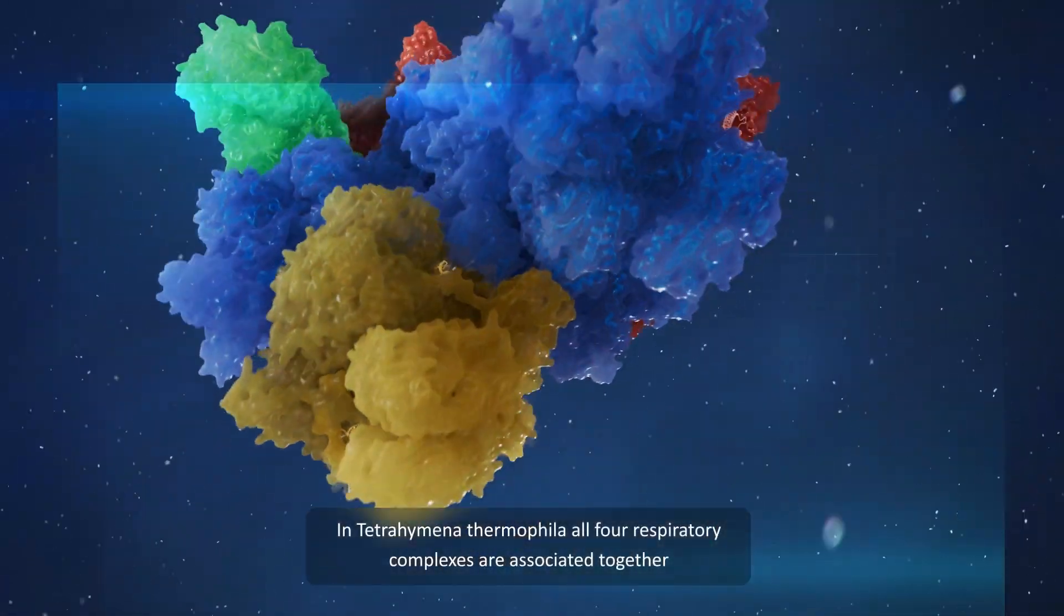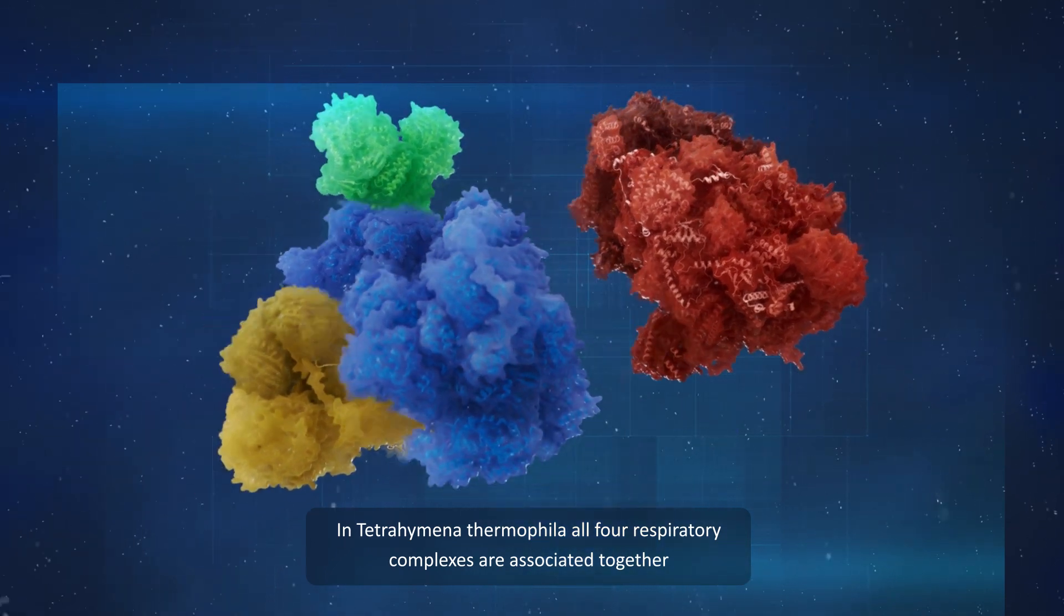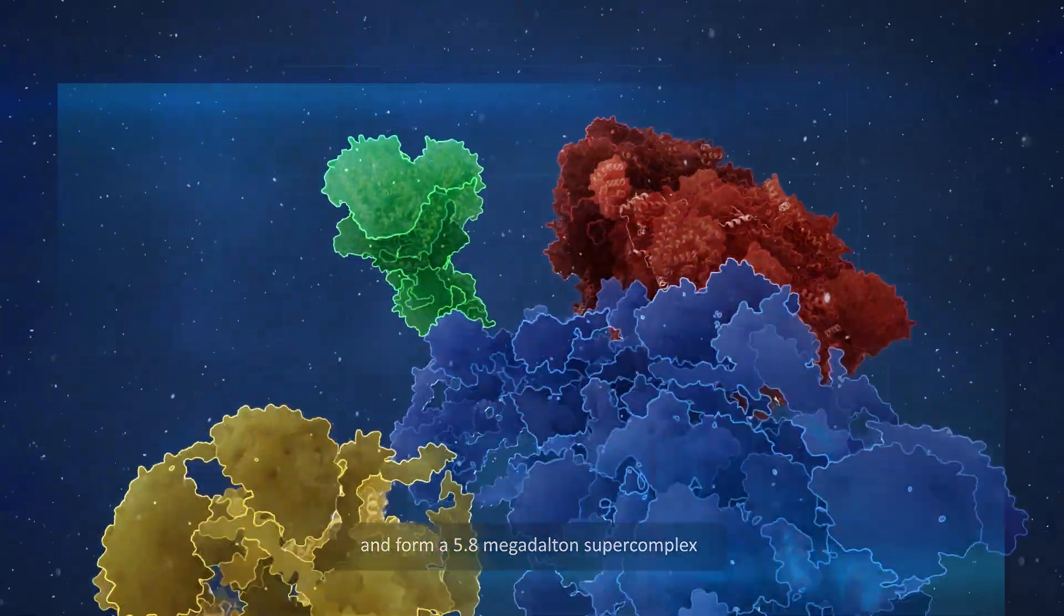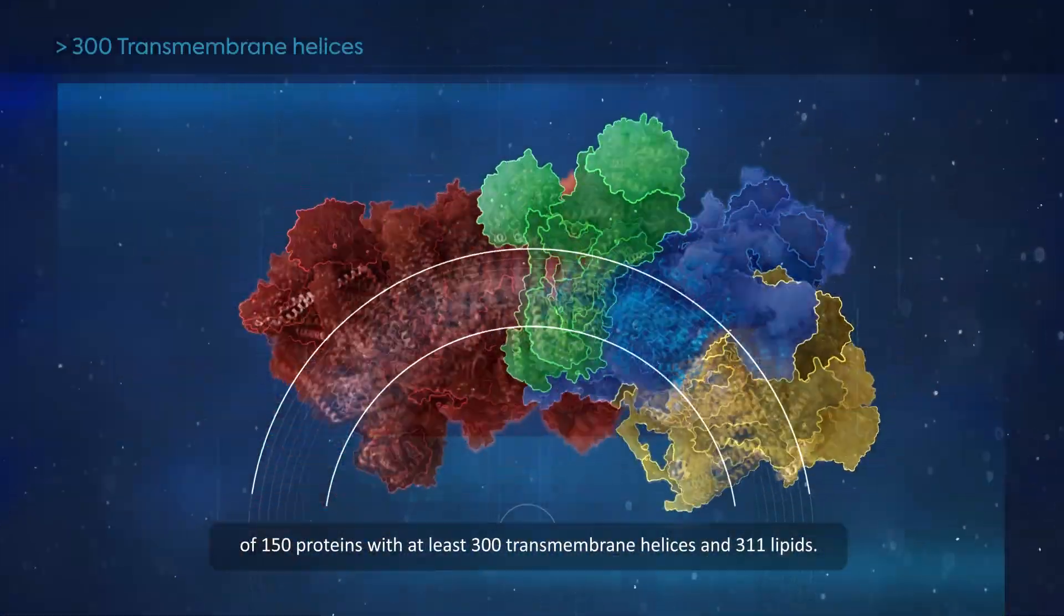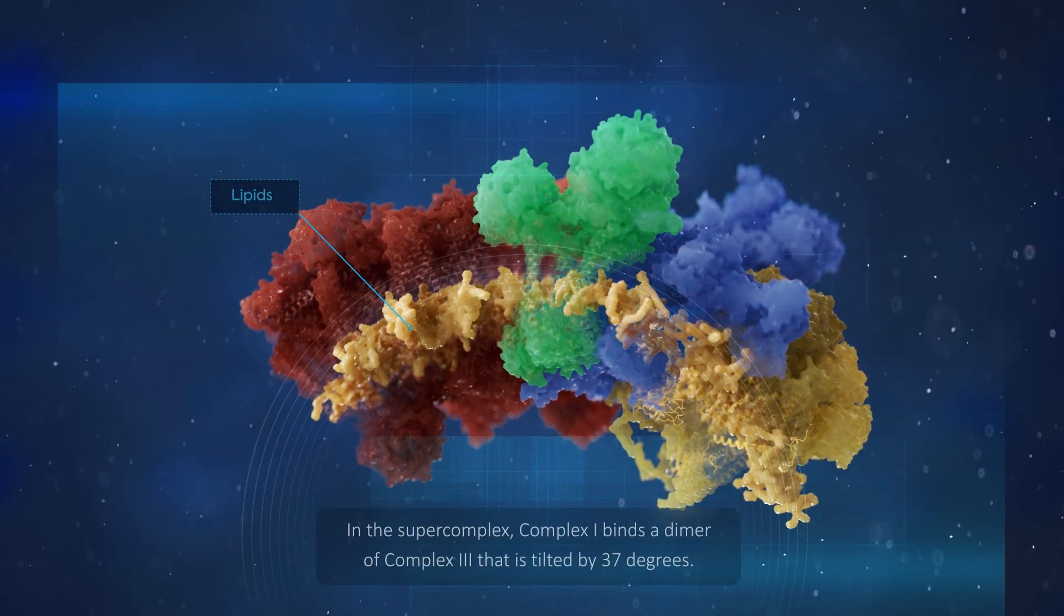In Tetrahymena thermophila, all four respiratory complexes are associated together and form a 5.8 megadalton supercomplex of 150 proteins with at least 300 transmembrane helices and 311 lipids.